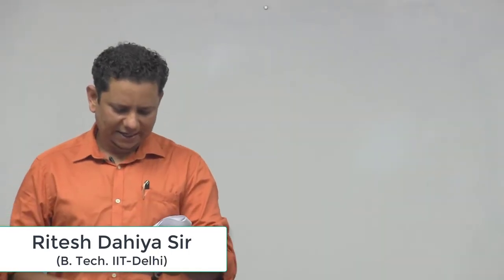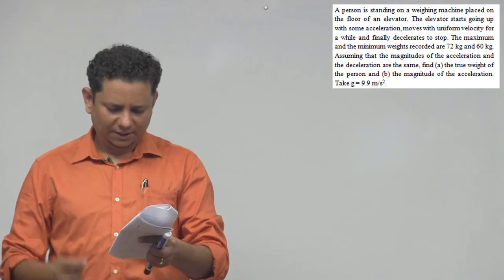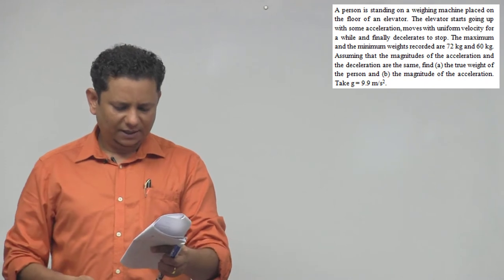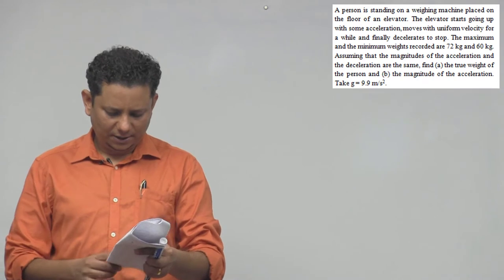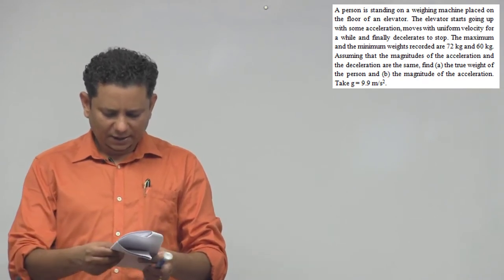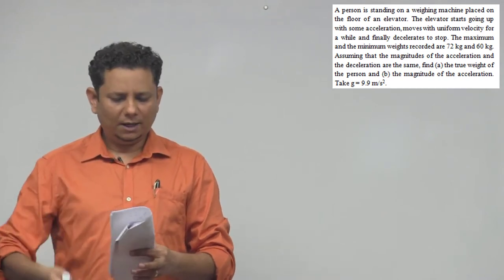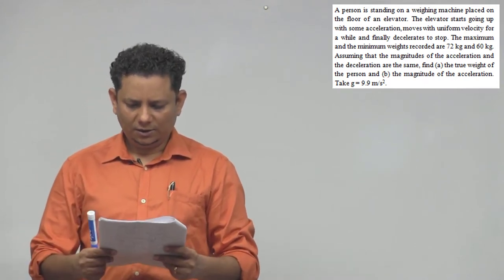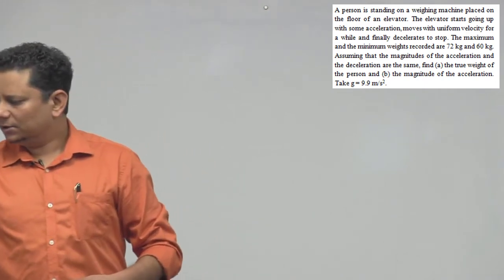Next question: A person is standing on a weighing machine placed on the floor of an elevator. The elevator starts going up with some acceleration, moves with uniform velocity for a while, and finally decelerates to stop. The maximum and minimum weights recorded are 72 kg and 60 kg respectively. The magnitude of acceleration and deceleration are the same. Find the true weight of the person and the magnitude of acceleration. Take g = 9.9 m/s².